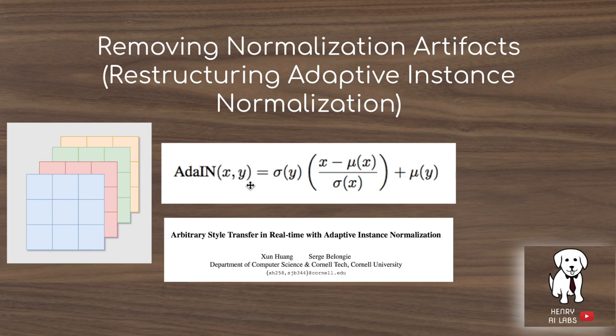Adaptive instance normalization, or AdaIN, is one of the key components of StyleGAN. It's used to have the latent vector W influence the features of the generator as it's generating an image. The latent vector W controls the scaling and shifting parameters of the normalization of these intermediate feature maps.